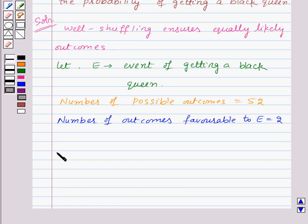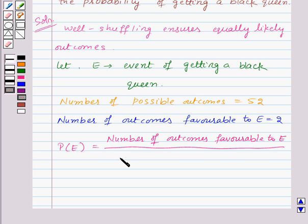We know that probability of an event E is given by number of outcomes favorable to the event E upon number of all possible outcomes.